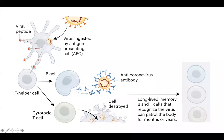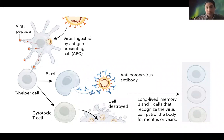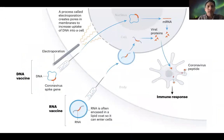Las células T cooperadoras presentan esta proteína a las células B para formar anticuerpos y a las células T citotóxicas para destruir a las células que estén infectadas por el virus. De largo plazo, estas células B y células T pueden reconocer al virus y patrullar durante muchos meses o años, dependiendo de la intensidad de la inmunidad, y entonces tener la inmunidad para él.